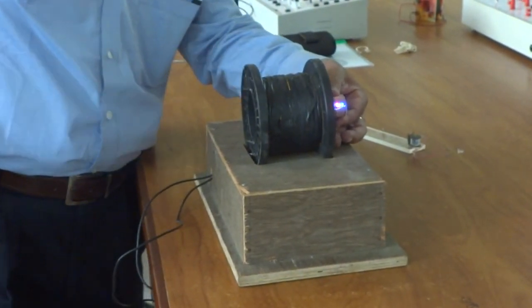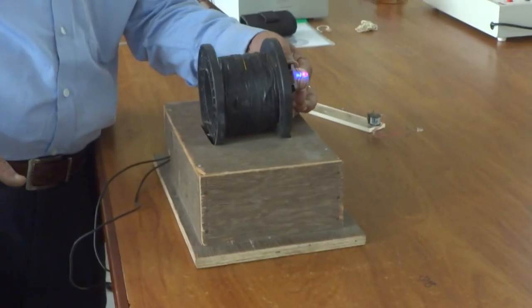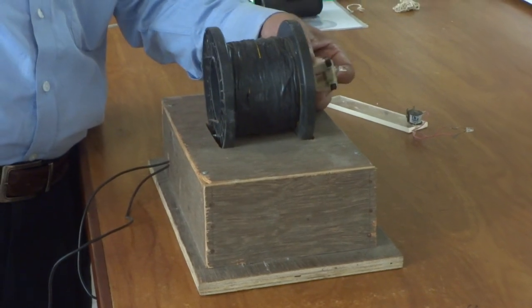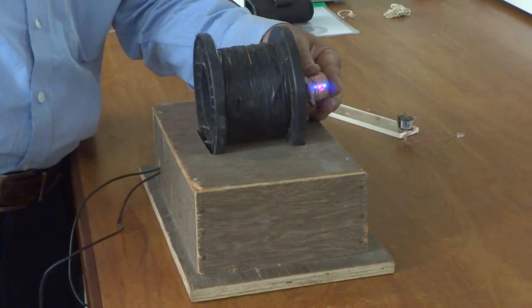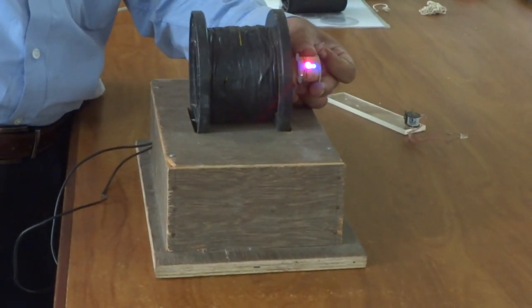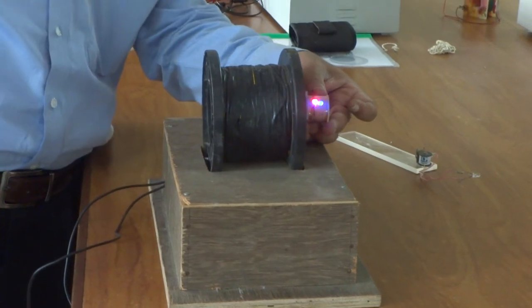So, you can say first the mutual induction depends on the geometrical alignment of the primary and secondary coils. The second one is, it depends on the number of turns. If more is the number of turns, then in the secondary coil, more induced current is there.